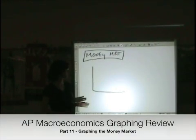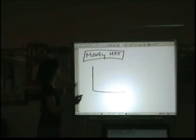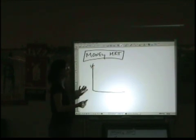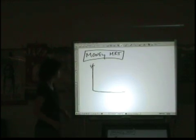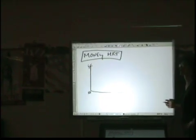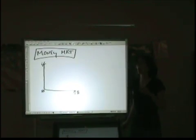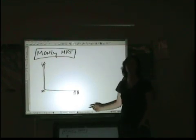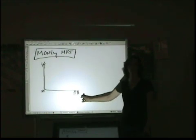Looking at the money market, what you want on your vertical axis is the interest rate. You can represent that as a lowercase i or lowercase r for rate. I always use i because that's what I'm used to, but either one is fine. Along the bottom, what you want is just quantity of money. Just put quantity of money to be consistent.